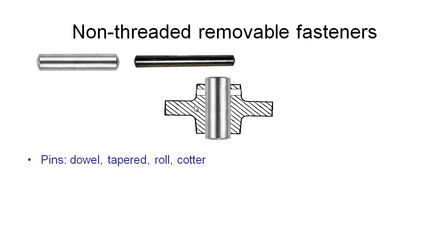A slightly cheaper alternative to a parallel dowel pin is a taper pin. We use a cheaper manufacturing technique to create a matching tapered hole using a reamer, then hammer the taper pin in until it jams in the matching tapered hole. This is a slightly cheaper method, and it's also good for removing any slop between the shaft and the hub.